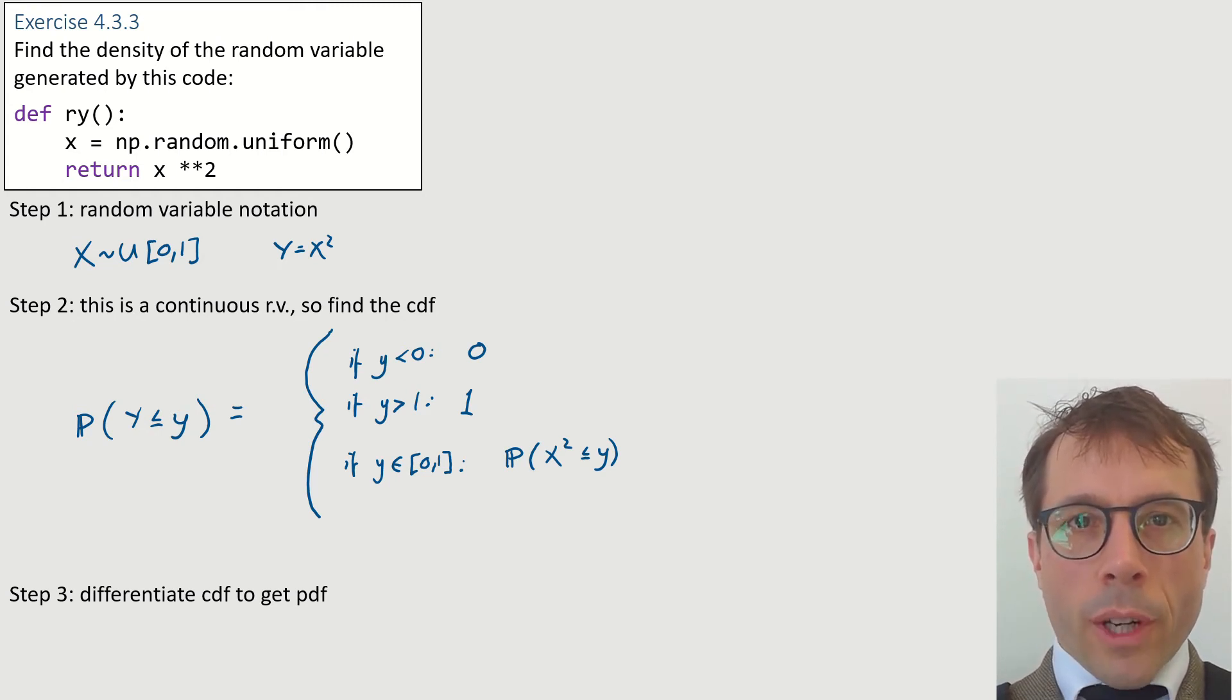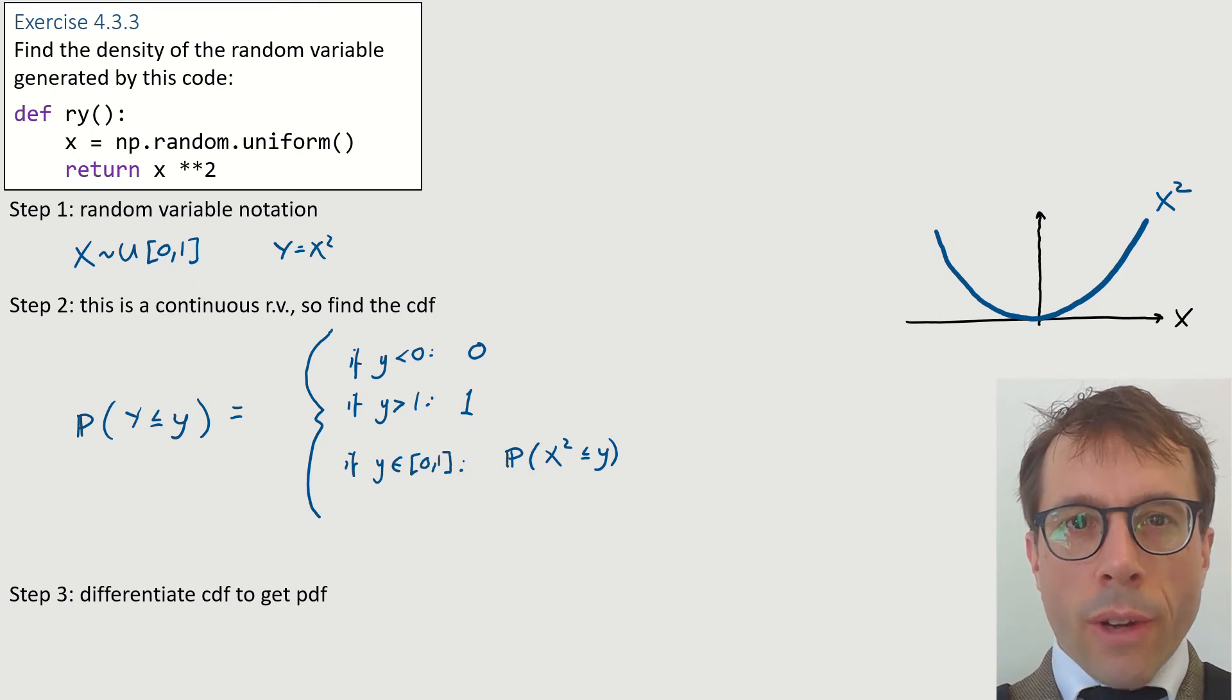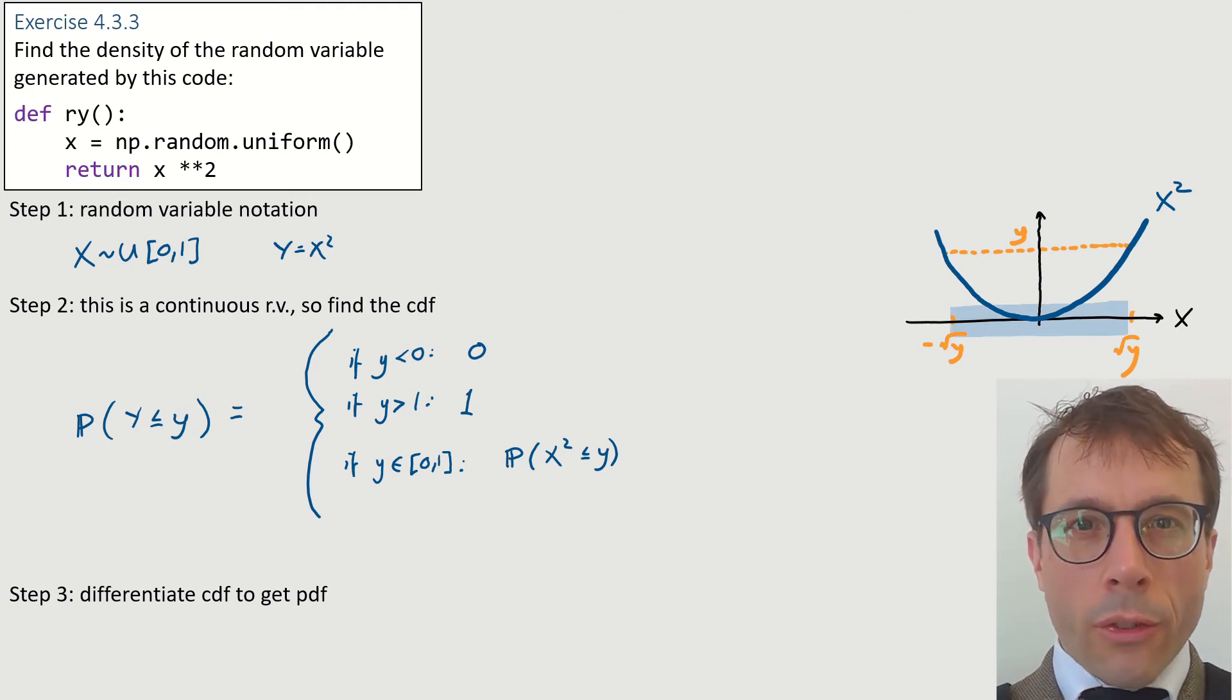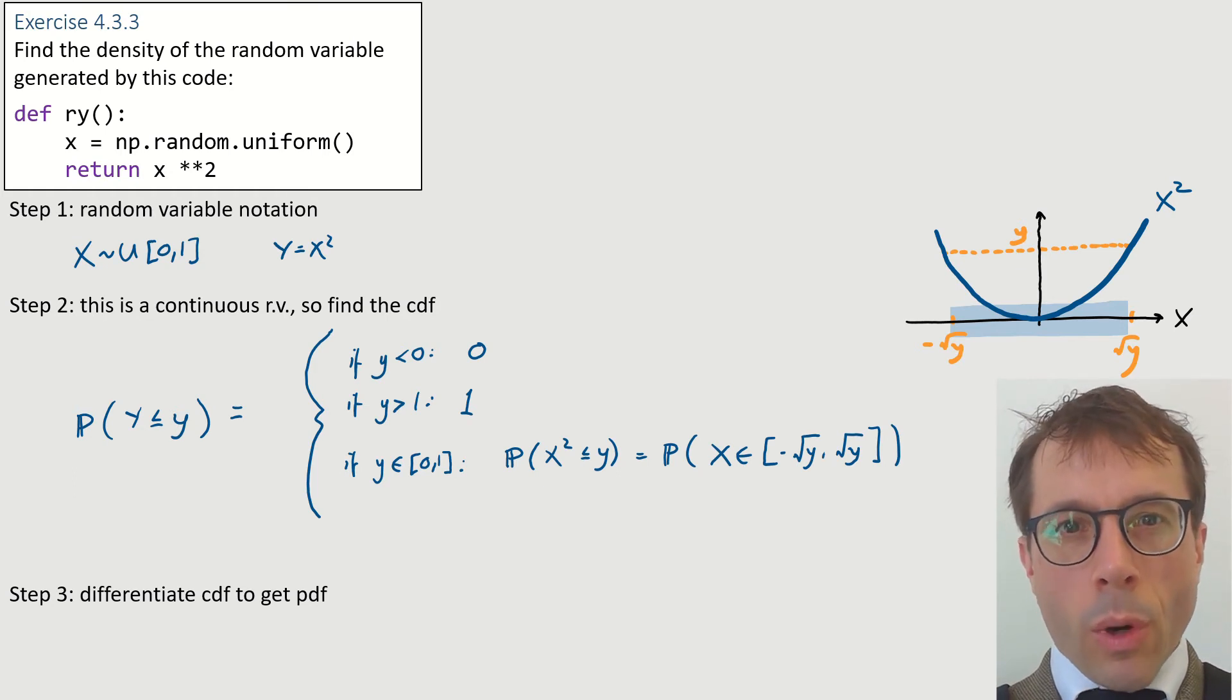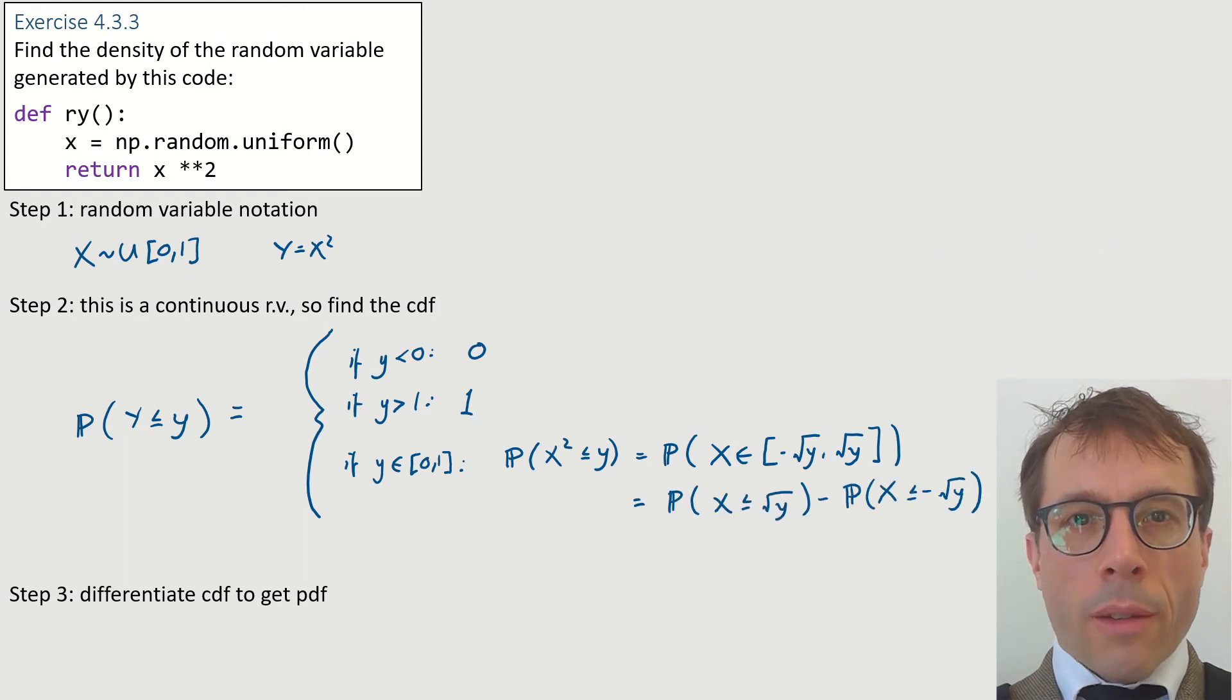I still want to simplify it a bit more to make it look like probability that x is in a set. It's helpful to sketch out a graph of the function x squared, and then to ask, for what values of x is x squared less than or equal to y? From this sketch, we can see that the event we're after is the event that the random variable big X lies in the range minus root y to plus root y. The next step is just plain Venn diagram stuff.